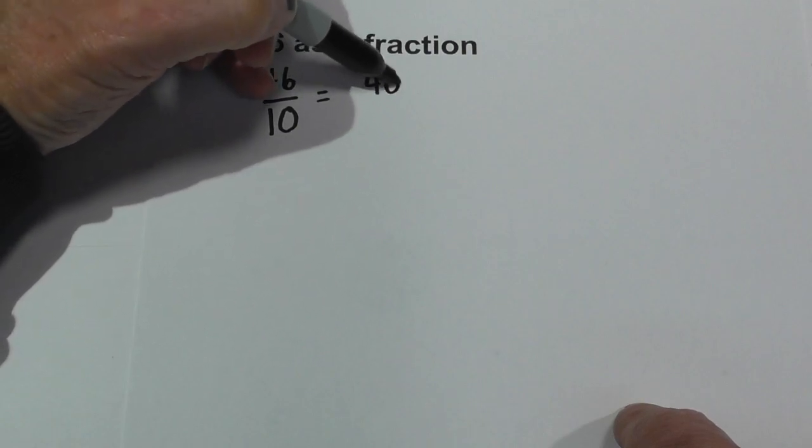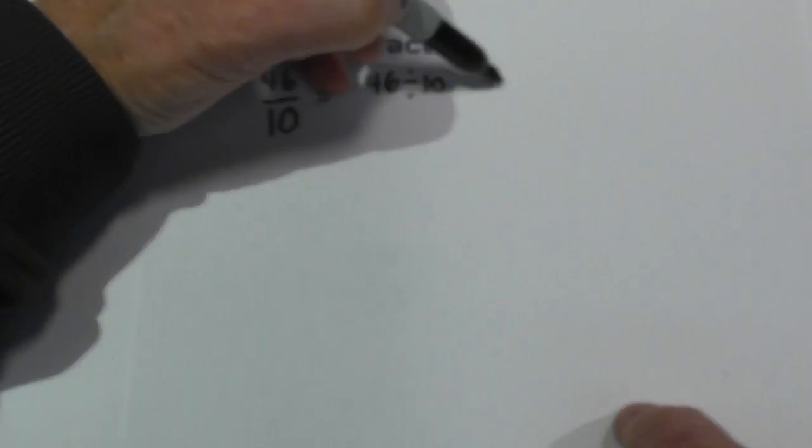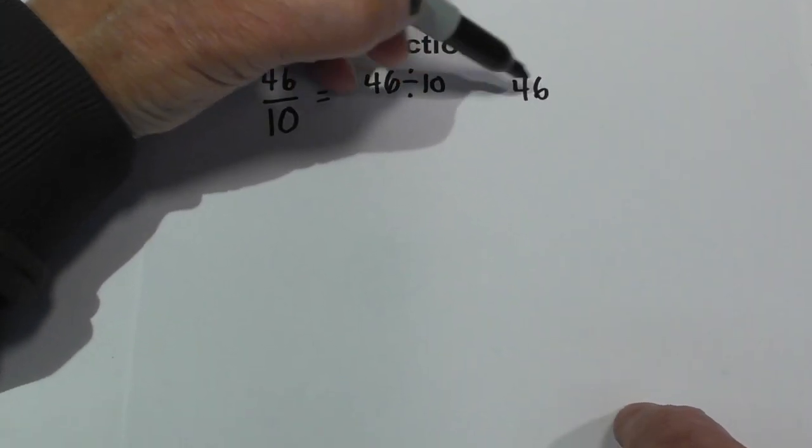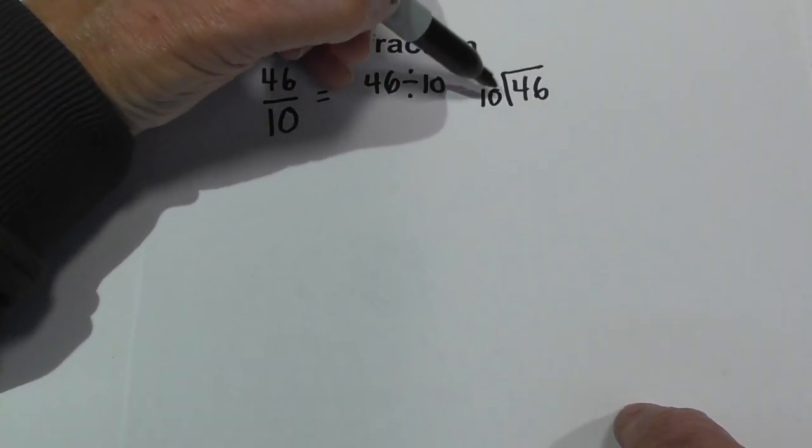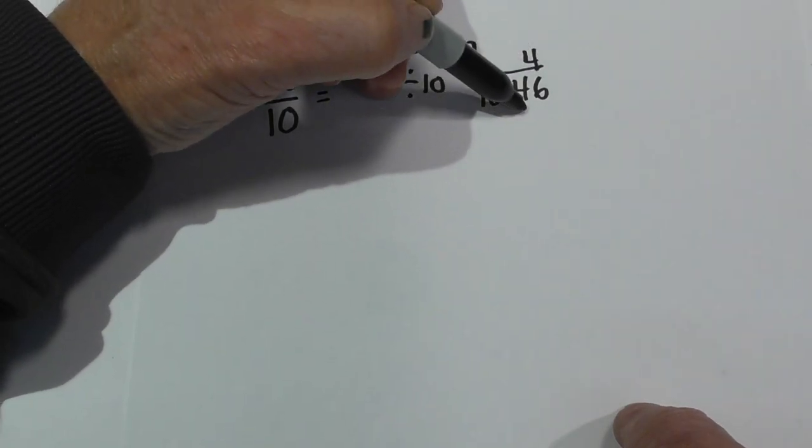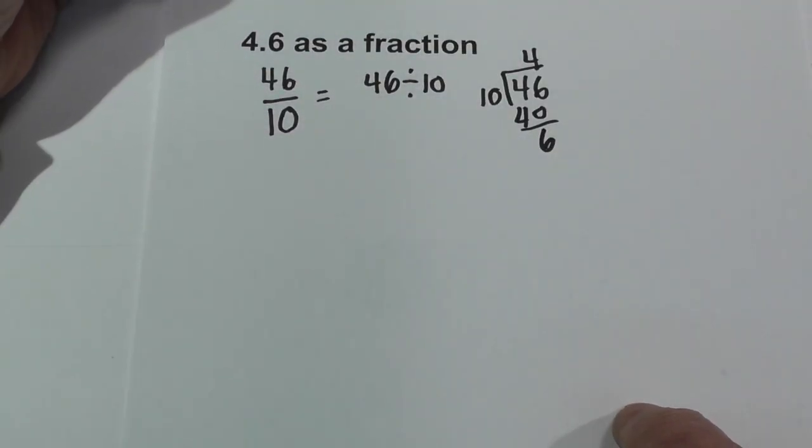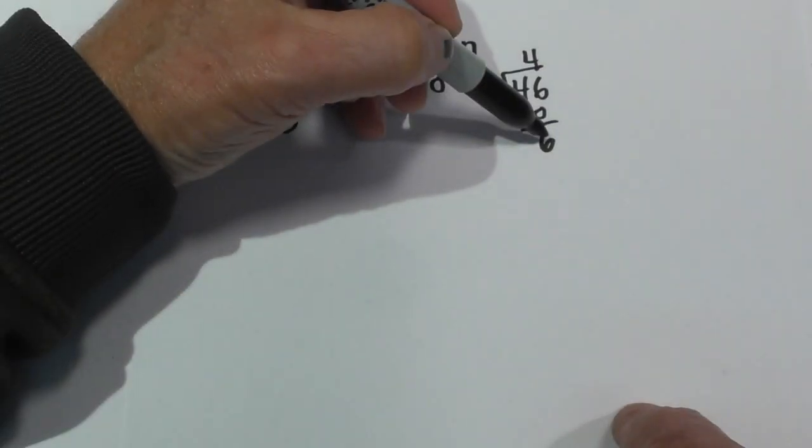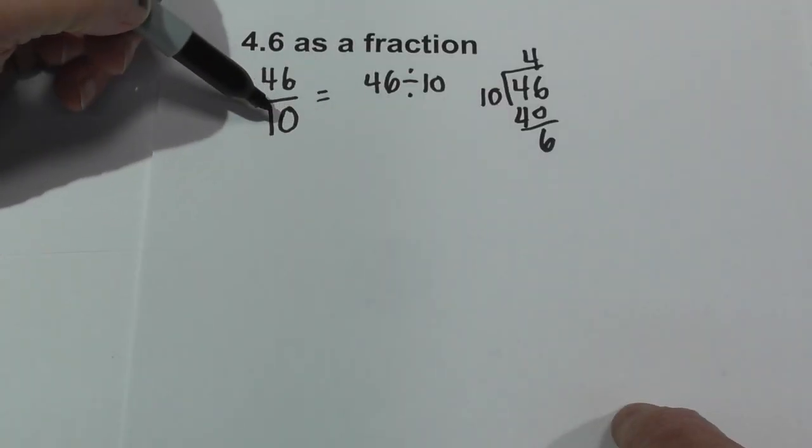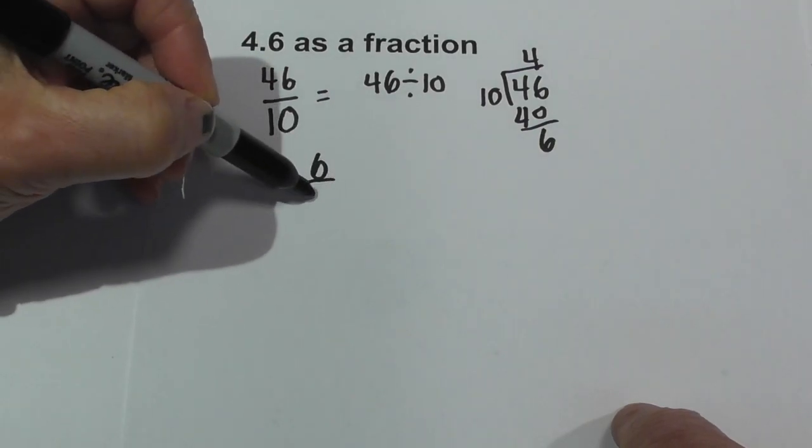So I'm going to take 46 divided by 10. 10 goes into 46 four times. 4 times 10 is 40, and you have a remainder of 6. Now what we do is we take the remainder and place it over our original denominator. So I'm going to write 6 over 10.